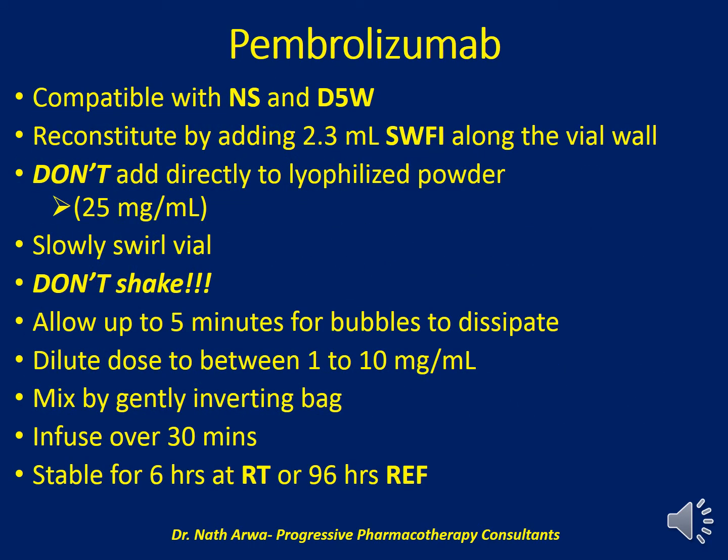Pembrolizumab is compatible with both 5% dextrose in water and normal saline. Reconstitute by adding 2.3 ml of sterile water for injection along the vial wall — do not add it directly to the lyophilized powder. We should end up with a final concentration of 25 mg per ml after dissolution by slowly swirling the vial — do not shake, as it would cause foaming. Allow up to 5 minutes for any bubbles formed to dissipate.